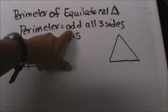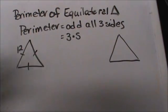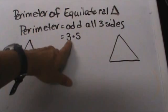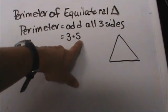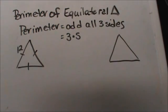So you can just add all three sides together to get the perimeter. Or since they are equal, you can just take three times the length of one side, that S stands for side, and you will get the perimeter.